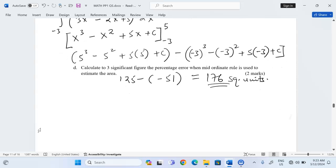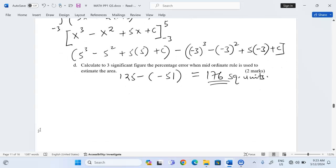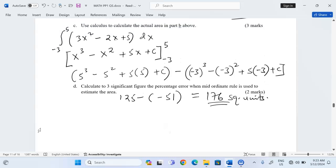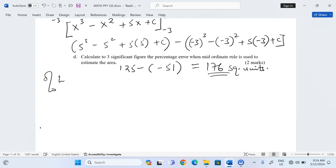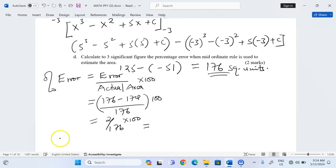Calculate to three significant figures the percentage error when mid-ordinate rule is used to estimate the area. We can see exact area is 176 and the estimated area is 174. There is an error. For us to get percentage error in the area, you need the error divided by actual area or rather exact area times 100. When we take 176 and subtract 174, then divide by the actual 176 and express as a percentage, we'll get 2 out of 176 by 100 and this will give us exactly 1.136%.